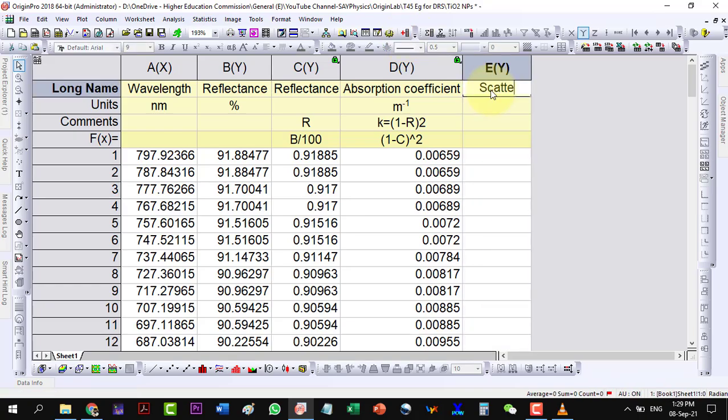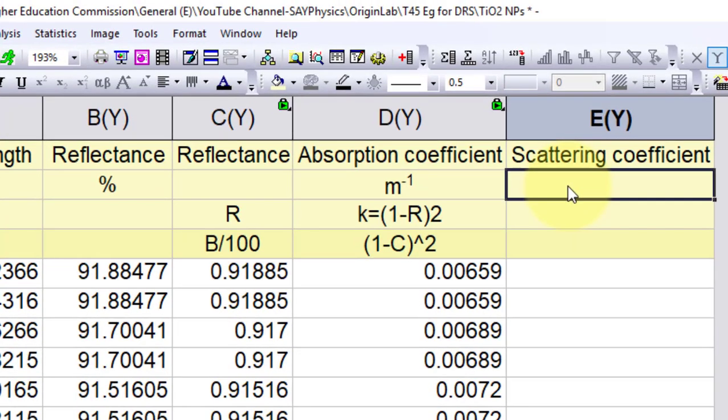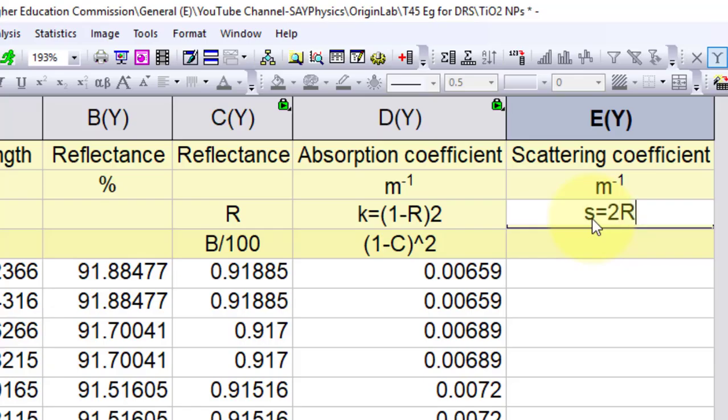Next we will find scattering coefficient s in meter inverse, which is 2R, so we can write 2 times column D.